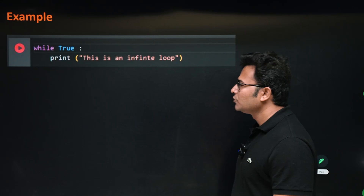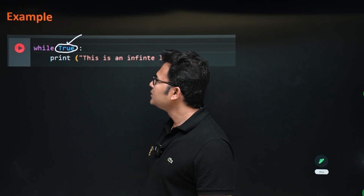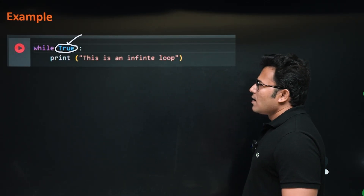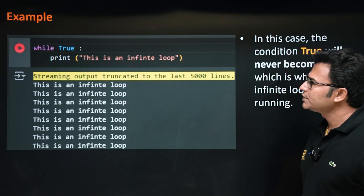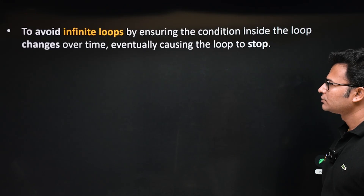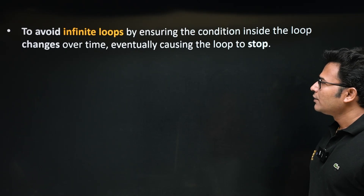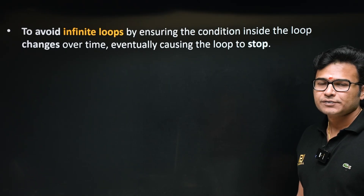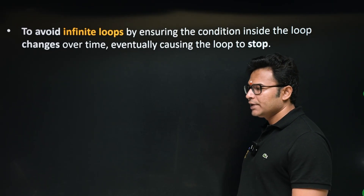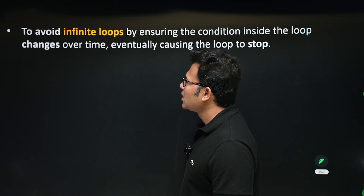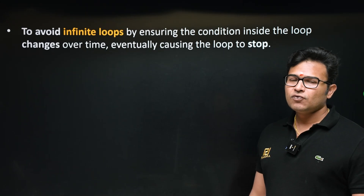Even if you write 'while True', it means the condition will never be false, so the while loop will loop on that block forever. To avoid infinite loops, you have to make sure the loop variable changes in such a way that at some point the condition becomes false, otherwise you will fall into an infinite loop.